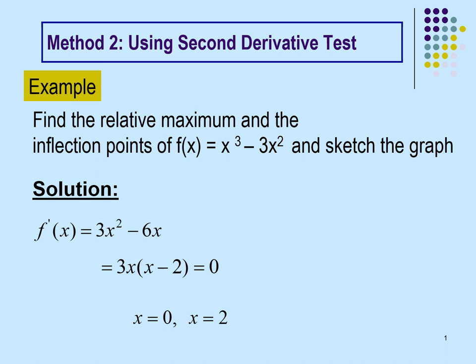Let's see the first example. We need to find the relative maximum and the inflection points of f(x) = x³ − 3x², and then sketch the graph. First, we start with the first derivative. Differentiating this function gives 3x² − 6x. Setting this equal to 0 to find the critical values gives x = 0 and x = 2.